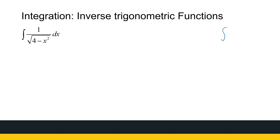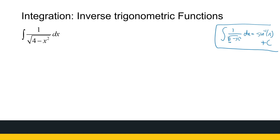We know that the integral of one over the square root of one minus x squared dx gives arc sine of x plus C, but that's not exactly what we have here. Instead of a one, we've got a four. So we need to manipulate this to make it look like the standard form we already know, using a bit of work before the substitution.